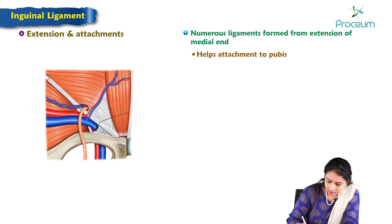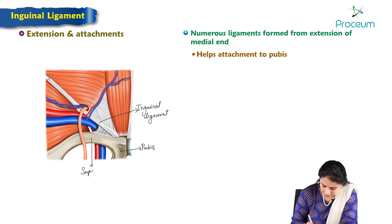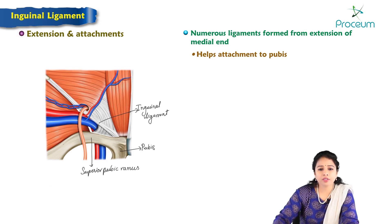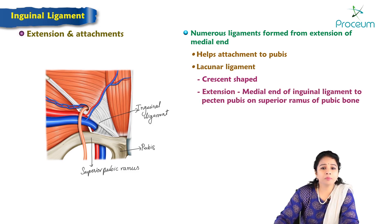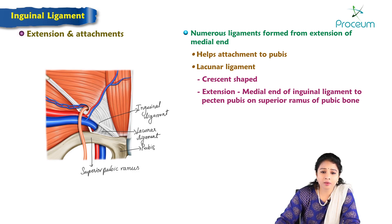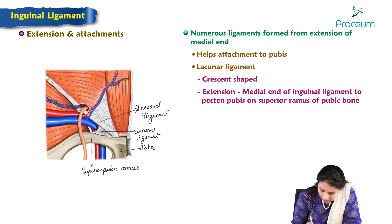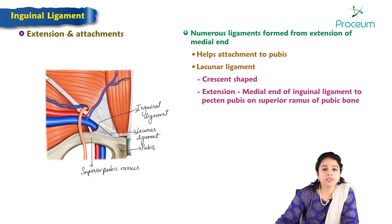Here in this image we can see the inguinal ligament and the superior pubic ramus. The first modification of the inguinal ligament at its medial end is the lacunar ligament, also known as Gimbernat's ligament. It is a crescent-shaped ligament extending from the medial end of the inguinal ligament onto the superior ramus of the pubic bone, along the pectineal line.